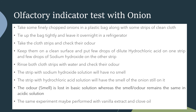For an olfactory indicator test with onion: take some finely chopped onions in a plastic bag along with some strips of clean cloth. Tie up the bag tightly and leave it overnight in a refrigerator. Take the cloth strips and check their odor. Keep them on a clean surface and put a few drops of dilute hydrochloric acid on one strip and a few drops of sodium hydroxide on the other strip. Rinse both cloth strips with water and check their odor. The strip with sodium hydroxide solution will have no smell, while the strip with hydrochloric acid solution will still have the smell of onion. The odor is lost in basic solution, whereas the odor remains the same in acidic solution. The same experiment may be performed with vanilla extract and clove oil.